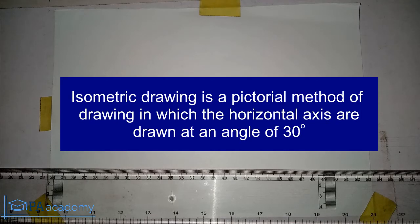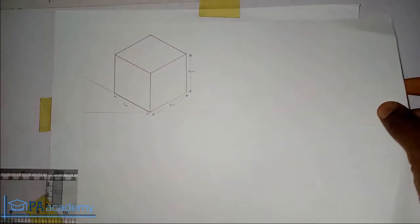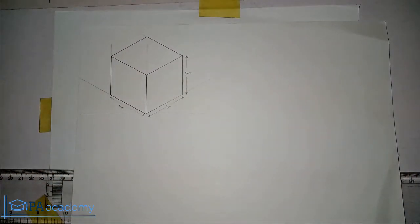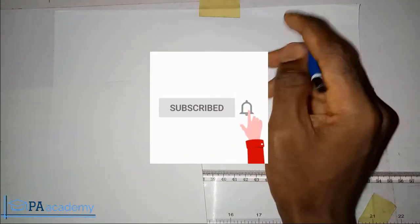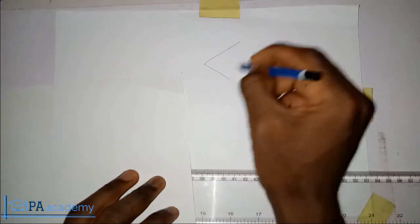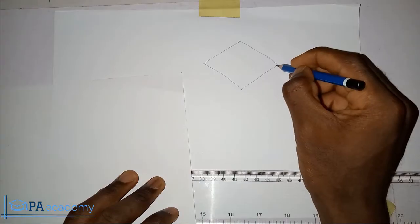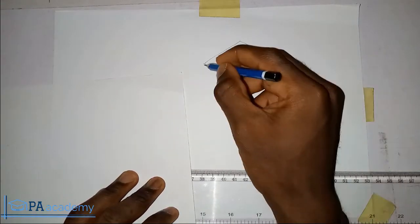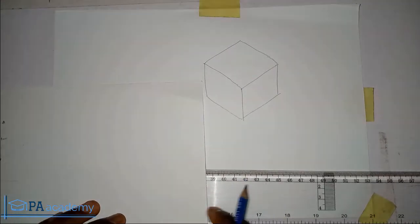When we talk about isometric drawing, isometric drawing is a pictorial method of drawing in which the horizontal axes are drawn at an angle of 30 degrees. Let me show you some of the drawings we are going to be looking at in the course of this video series. Here is an isometric drawing. Let me just do a freehand sketch on this sheet to explain the definition.